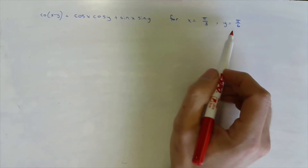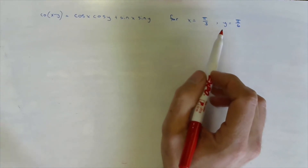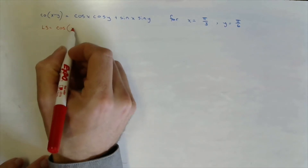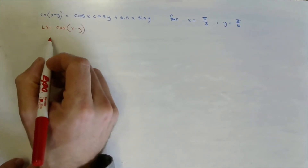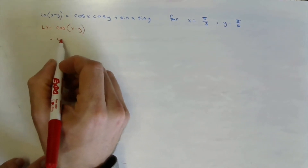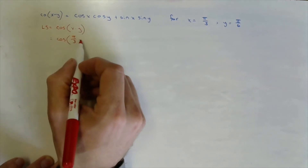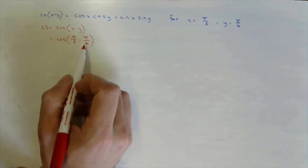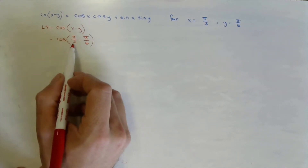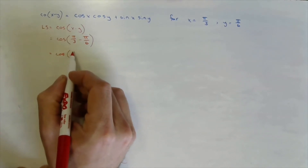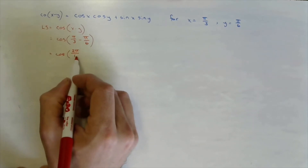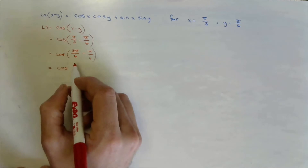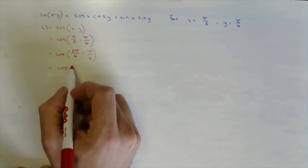In order to do that, all we really need to do is substitute in those specific angles into our equation. On the left side we have the cosine of x minus y, subbing in our values: the cosine of pi over 3 minus pi over 6. We need a common denominator of 6, so pi over 3 becomes 2 pi over 6, minus pi over 6.